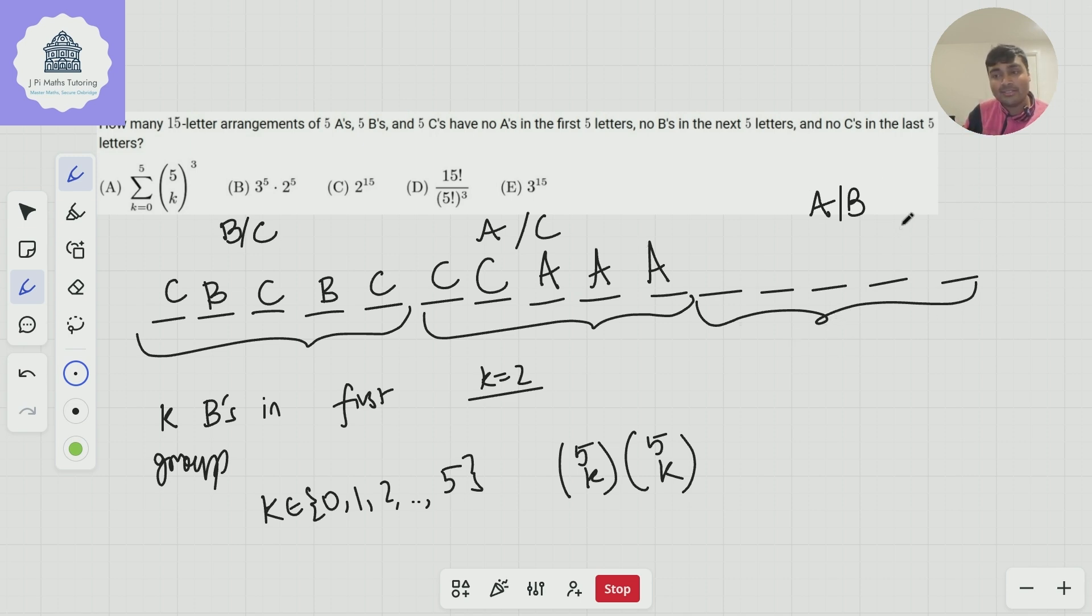Now we're down to this final one and you can see we can only put As and Bs in here. And well, we've got three—sorry, two more As because we put three of them here. So there's 5 choose 2 ways, or 5 choose K ways, of placing the As. And then the remaining spots have to be filled with the Bs.